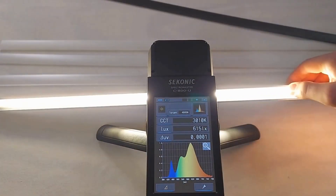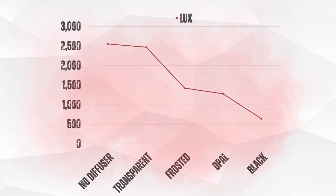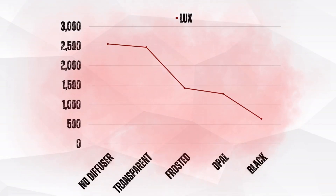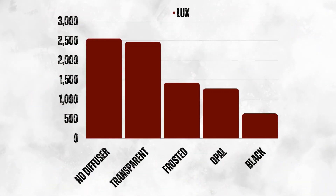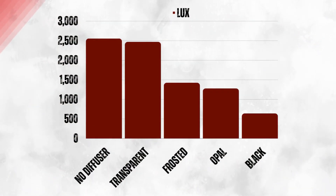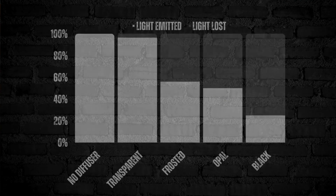Here are those tables. The main thing to consider when choosing your diffuser is the purpose of your light — will it be functional or feature lighting? For instance, the black diffuser would not be a great choice for brightening a room, but we've found that it looks really great with colored lighting.